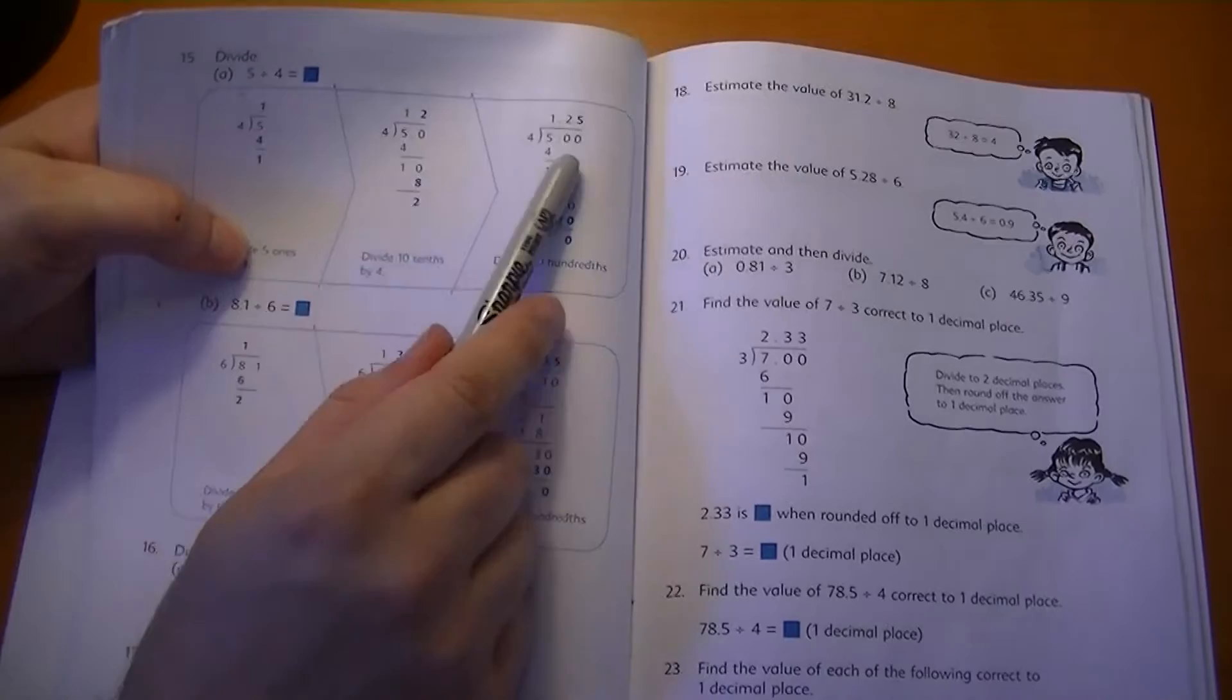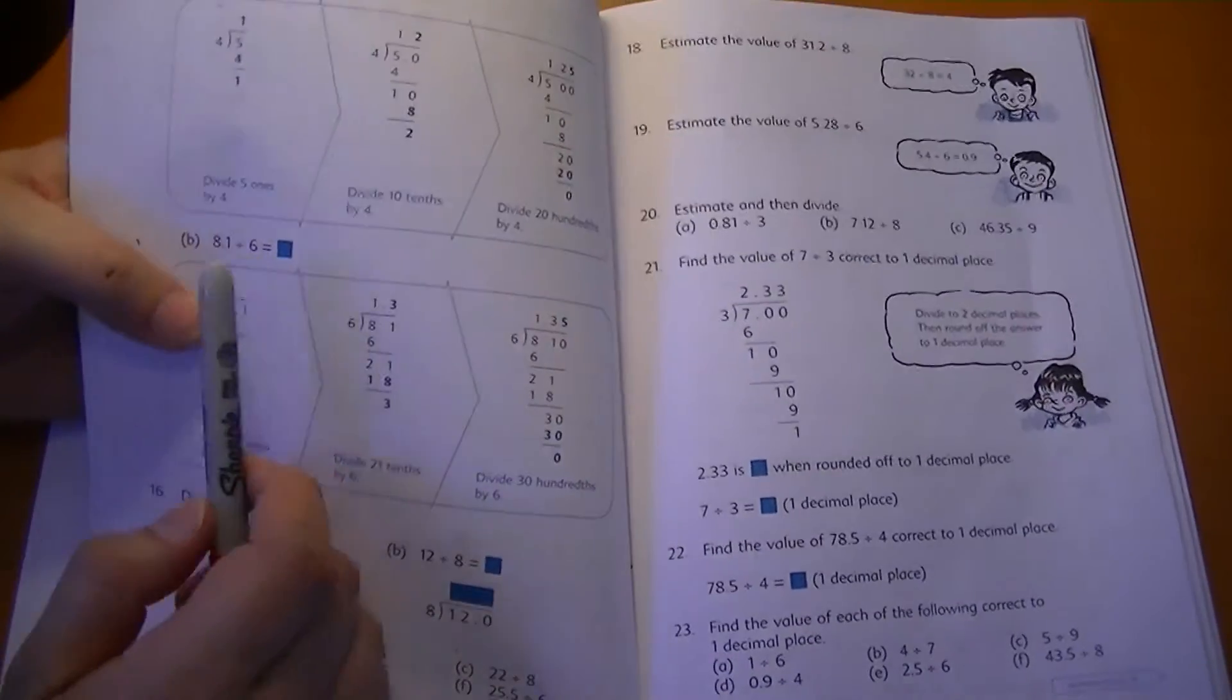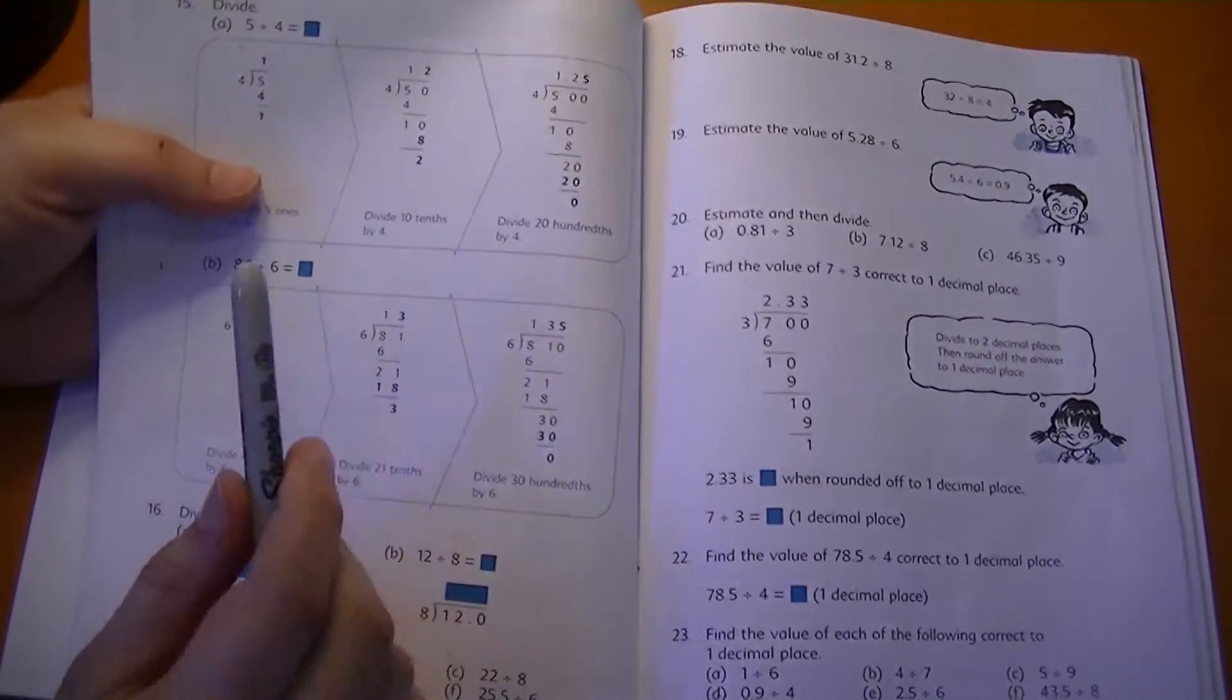The trick is you just keep adding zeros until you get a zero at the bottom. Until you're done. You just keep adding zeros until you're done.